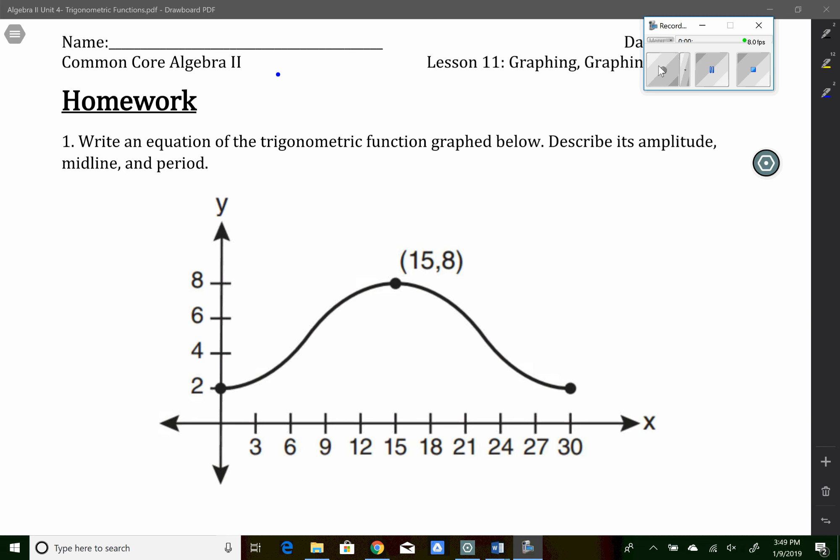So for question one, it says to write an equation of the trigonometric function graphed below, describe its amplitude, midline, and period. So for this function, it looks like a cosine function, just an upside down one, right?